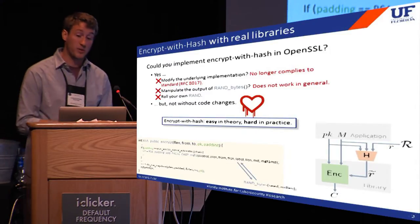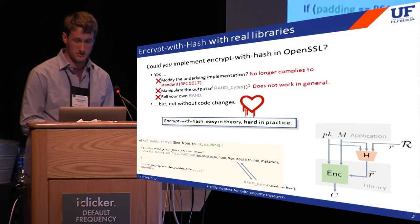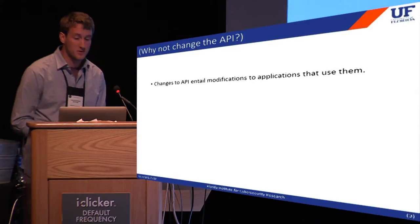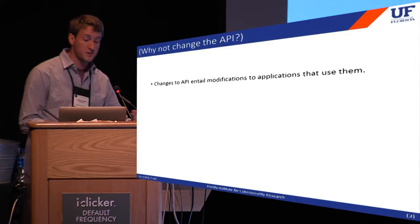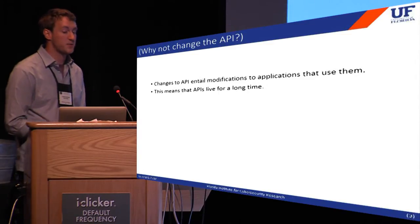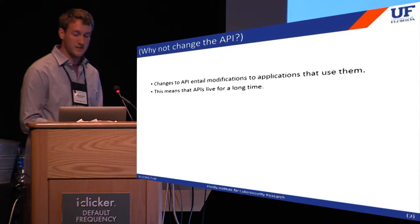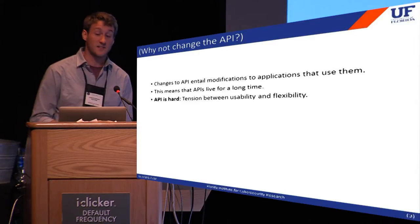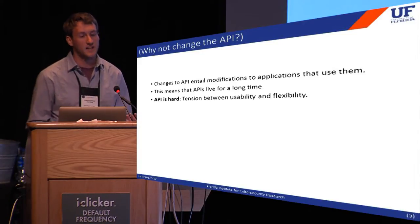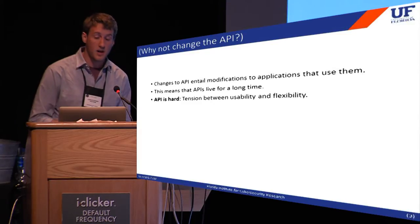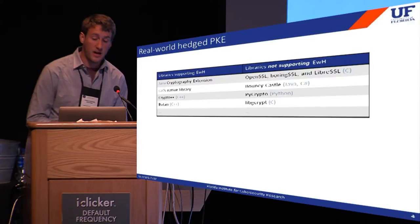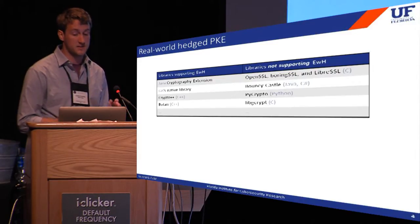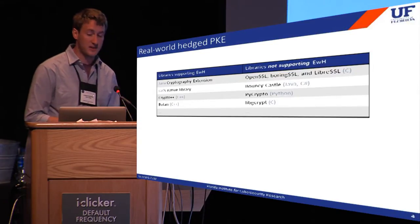The punchline is that Encrypt with Hash, while really nice in theory, is not as easy as it would seem to implement. If the problem is the API, then why not just change the API? Well, if a change is made to the interface, then every application that uses that interface needs to be modified as well — and it's for this reason that a library as heavily used as OpenSSL needs a very stable interface. We looked at a number of libraries and found that about half of them expose the RNG to the programmer in a way that directly facilitates Encrypt with Hash. This finding highlights the tension between usability and flexibility in API design. But none of the libraries that do expose the RNG are used as widely as OpenSSL.